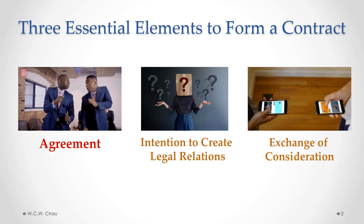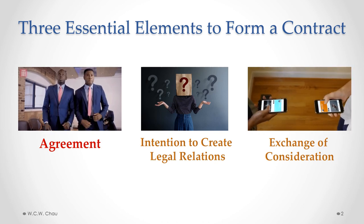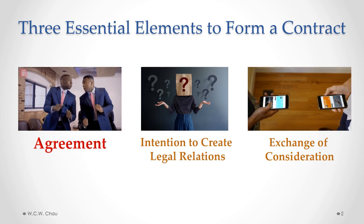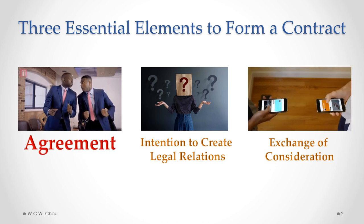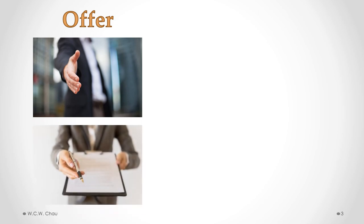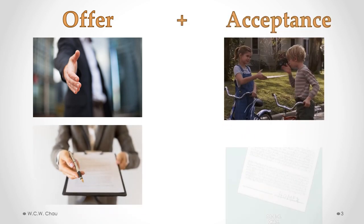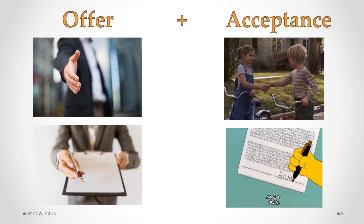There are three essential elements to form a contract. The first element is the one that we'll focus on in this video, which is an agreement between the parties. An agreement is made up of two things: the first is one person making an offer, and the second is an acceptance of that offer by the other person. Having those two things together gives us an agreement.